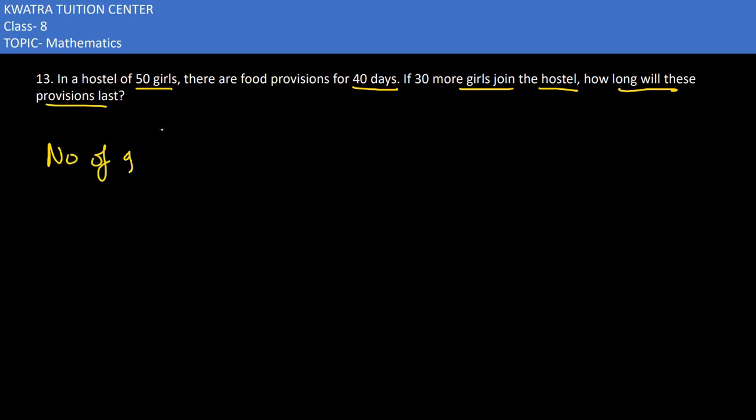So the data is about number of girls and the number of days. In the first case, they are saying if there are 50 girls, 40 days provision is there. In the second case, they are saying 30 more girls join the hostel.